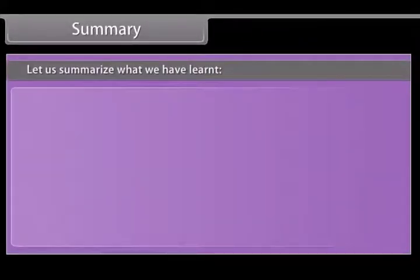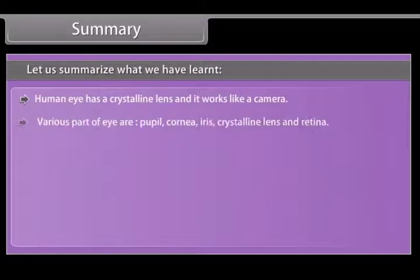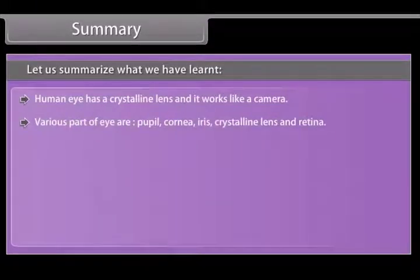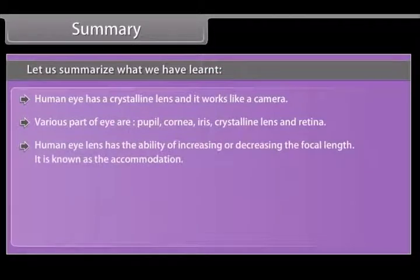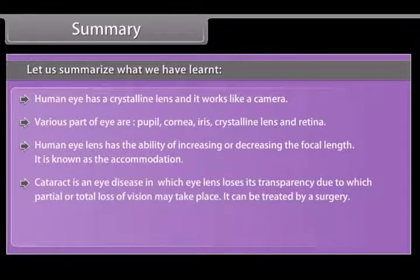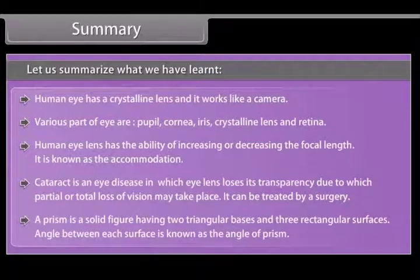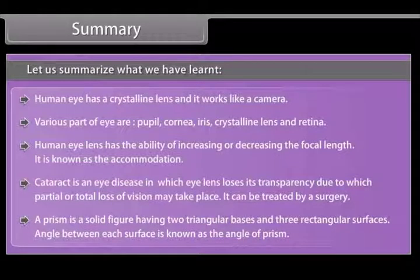Summary: The human eye has a crystalline lens and works like a camera. Various parts of the eye are the pupil, cornea, iris, crystalline lens, and retina. The human eye lens has the ability of increasing or decreasing its focal length, known as accommodation. Cataract is an eye disease in which the lens loses its transparency, causing partial or total loss of vision; it can be treated by surgery. A prism is a solid figure having two triangular bases and three rectangular surfaces; the angle between each surface is the angle of prism.